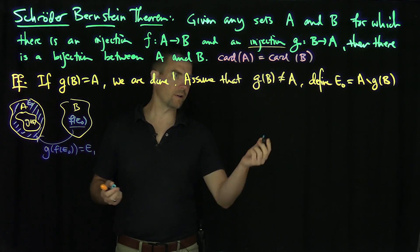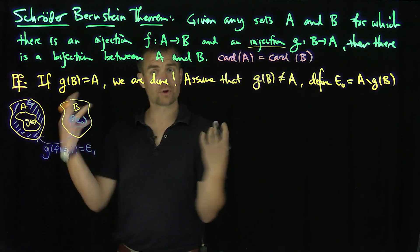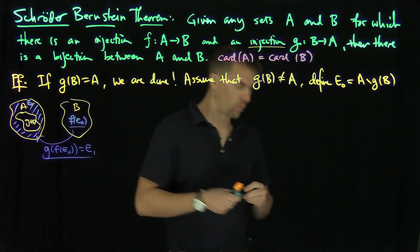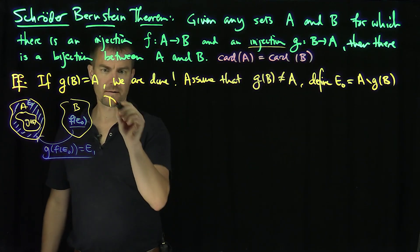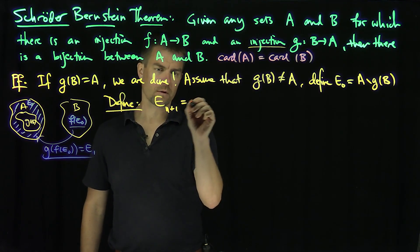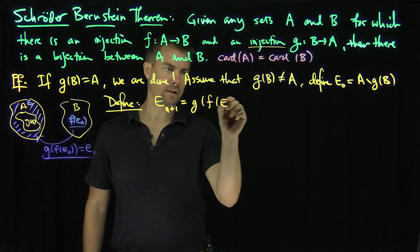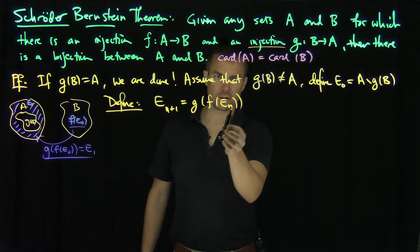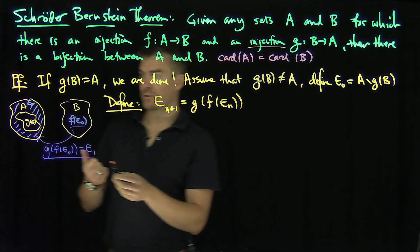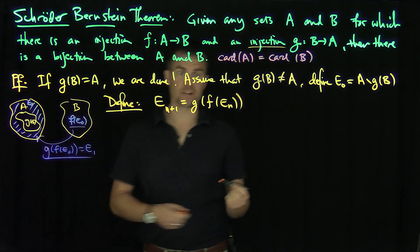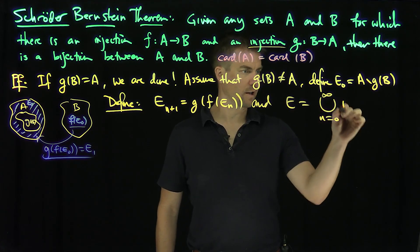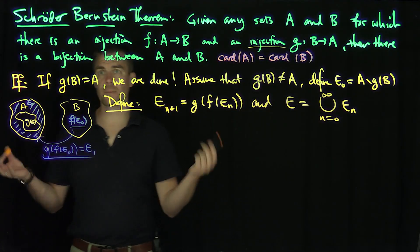So E1 is G of F of E0. We go back and forth to capture all the information that's lost in these injections. Then recursively define E_{n+1} to be G of F of E_n. And E is going to be the union, as N goes from 0 to infinity, of these sets E_N. Now I'm ready to define my bijection.